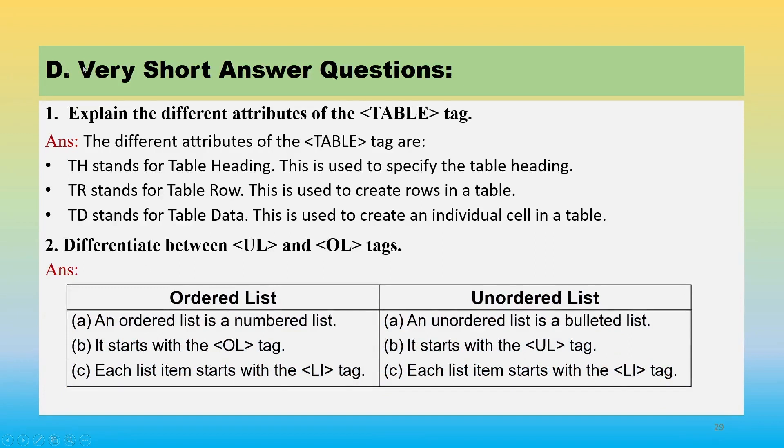Now under question D, very short answer questions, we have our first question: explain the different attributes of a table tag. The different attributes of table tag were TH, TR, and TD. TH stands for table heading, TR for table row, and TD for table data.